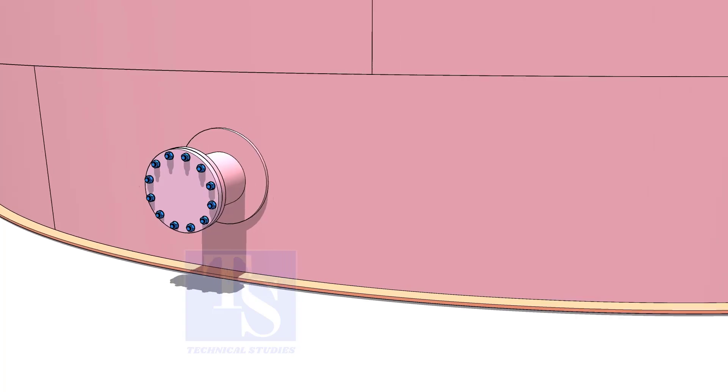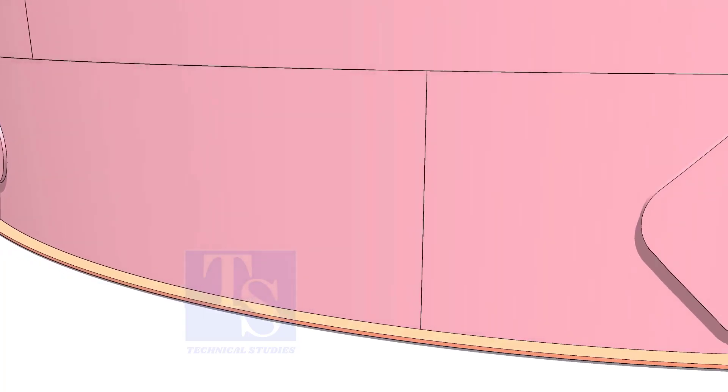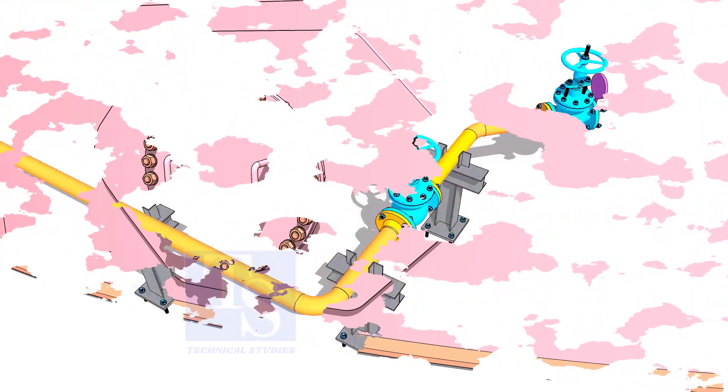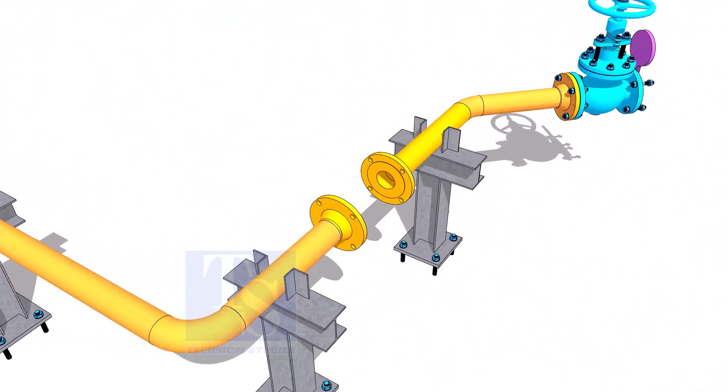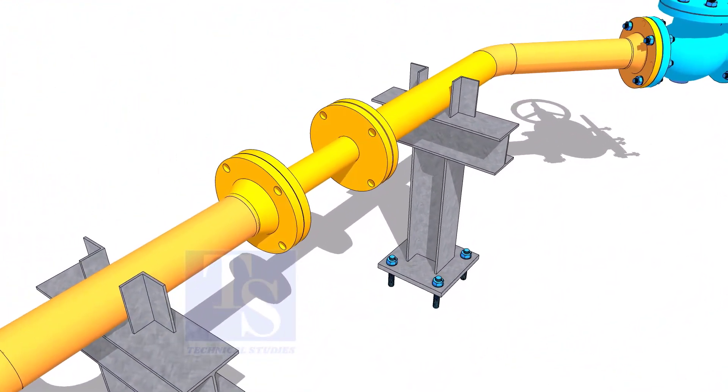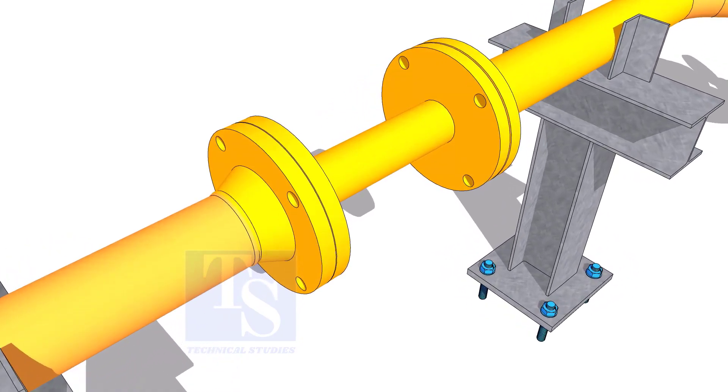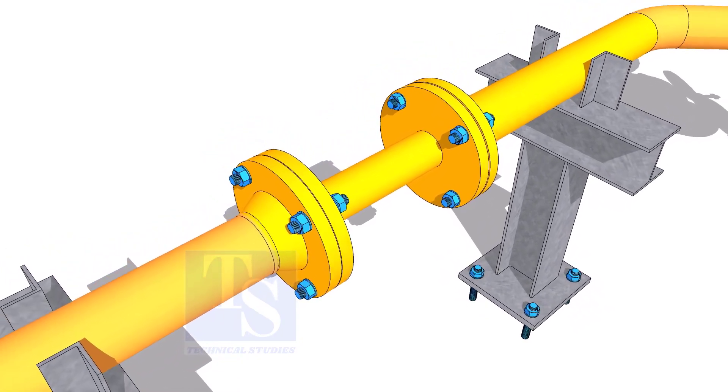Plate flanges are used for low-pressure services, or to blind the nozzles of vessels, tanks, etc. for hydrotest purposes. Other use of plate flange is making temporary spools to replace valves and equipment on a piping system.